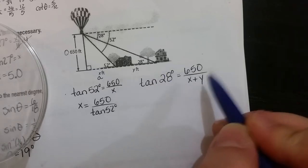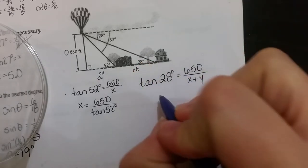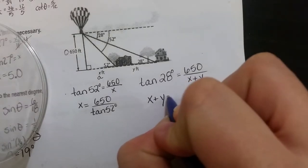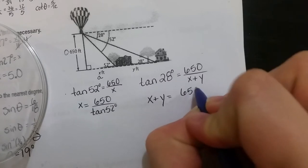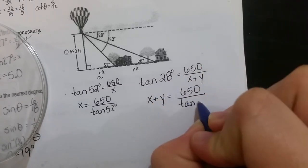So again in this circumstance, I'm going to switch the tan 28 with the X and Y. So I'm going to end up with X plus Y over here equals 650 divided by tan 28.